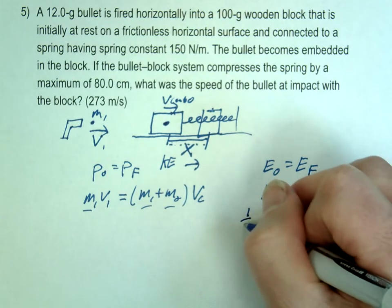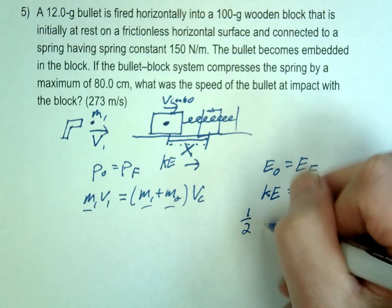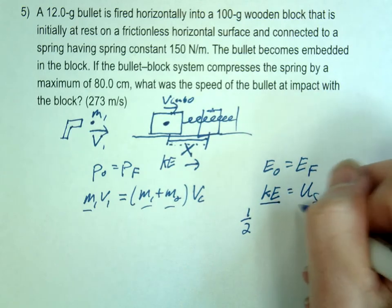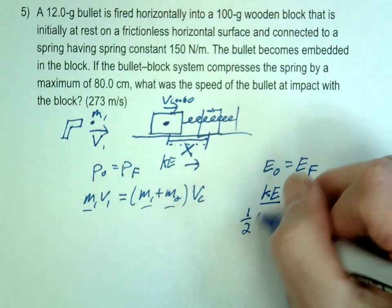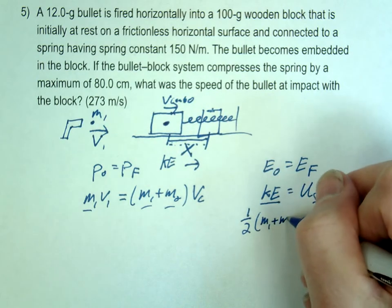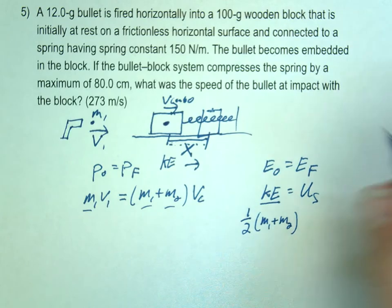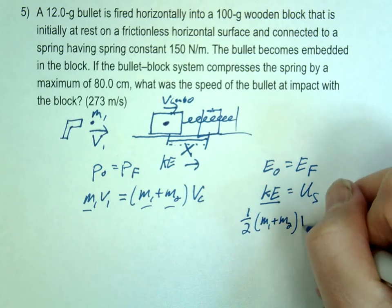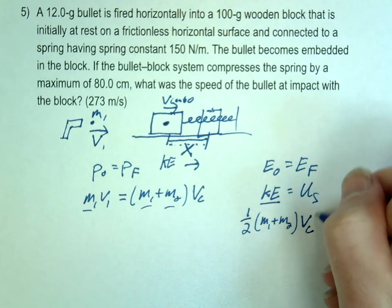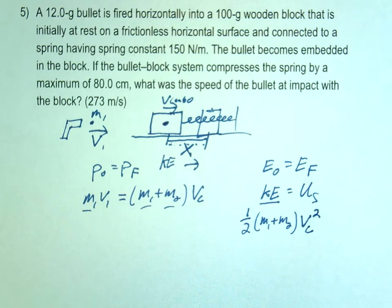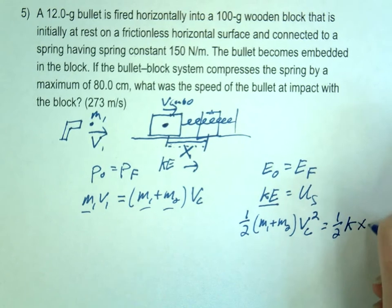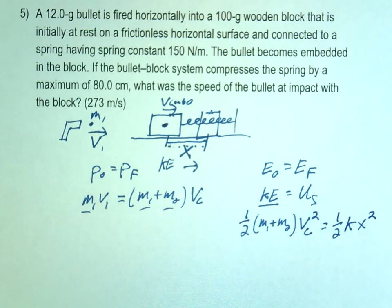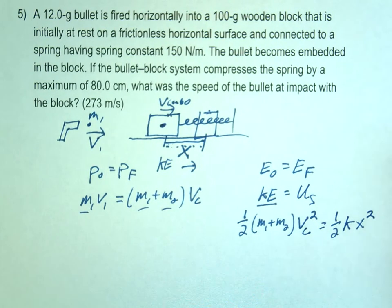So this would be 1 half. So what do I use for the mass for this? M1 plus M2, the combined masses, right? Because they're stuck together. And then the v is the v combo squared. And then that equals 1 half kx squared.